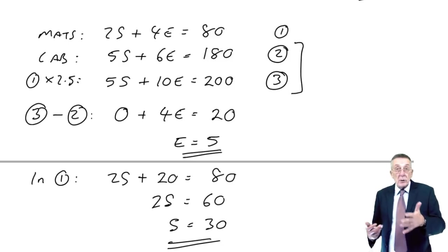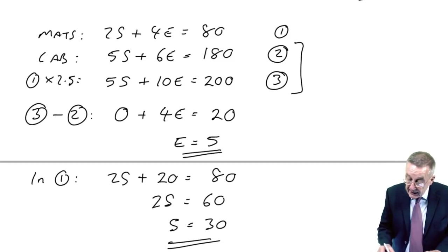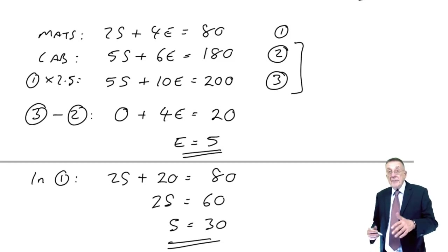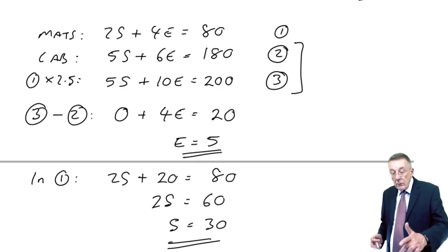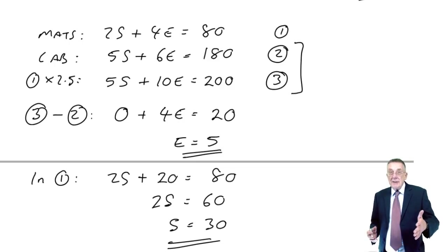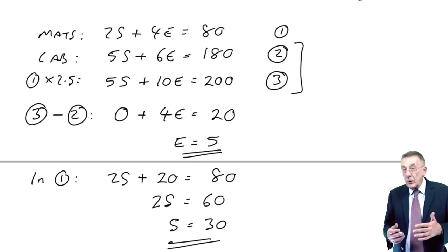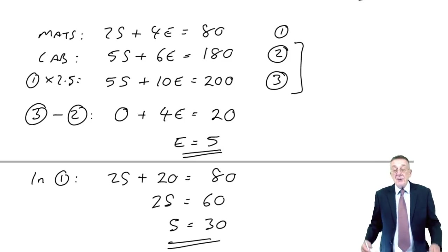I mean, the alternative, and you would have given the same answer, is if I'd multiplied the first equation by 1.5, it would have come to 6 e's, and had the same number of e's in both equations, we could then have worked out s, and so on.